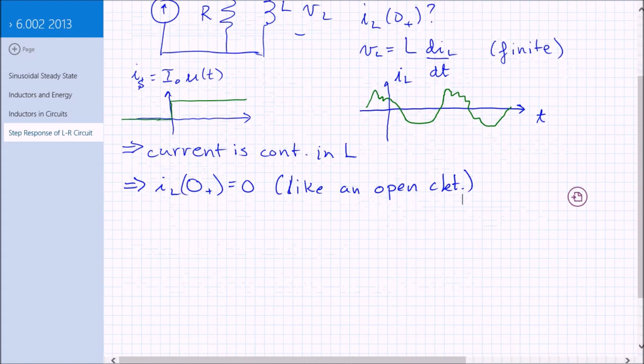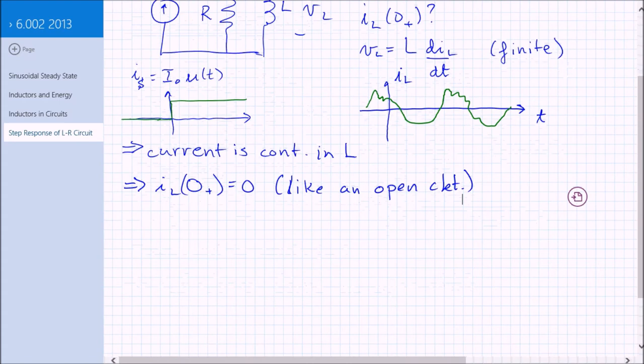Now, it turns out that that's not generally true. In general, in the short time limit, an inductor behaves like a current source. This particular current source has its source value set to zero. So, the current is zero.